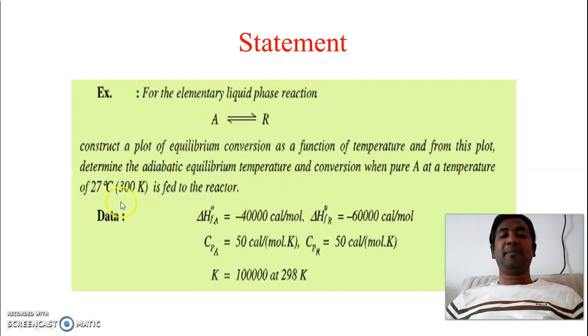So this is the problem statement: A is reversibly giving R. We have to construct a plot of equilibrium conversion as a function of temperature, and from this plot we have to determine the adiabatic equilibrium temperature and conversion when pure A at a temperature of 27 degrees centigrade, that is 300 Kelvin, is fed to the reactor and these are the values given as data.